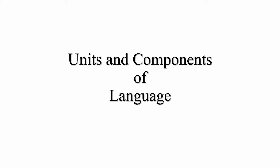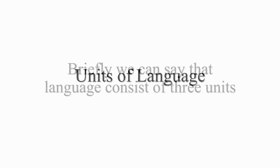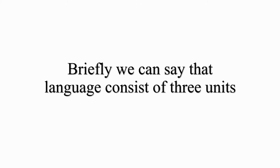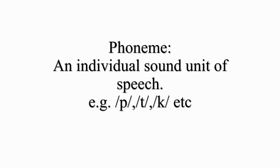Now, let us see what are the units of Linguistics. Briefly, we can say that Linguistics consists of 3 units. The first unit of Linguistics is phoneme. An individual sound unit of speech is known as a phoneme. For example, B, D, K, etc.